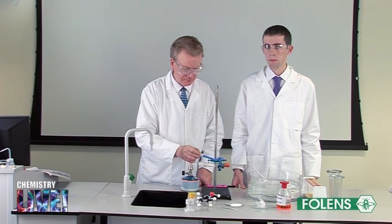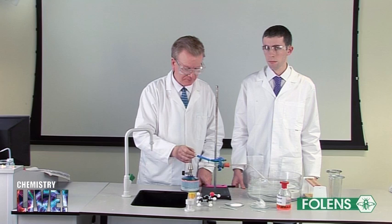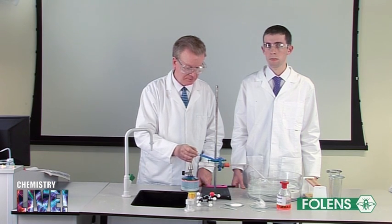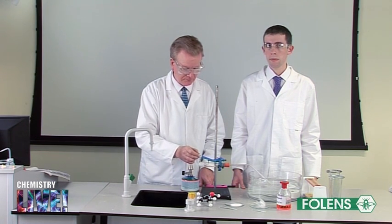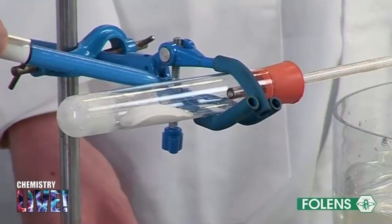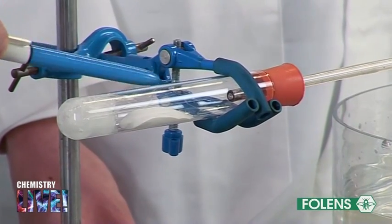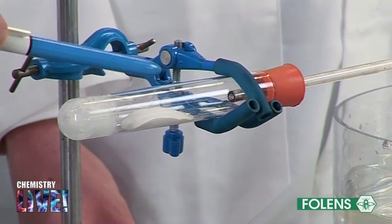Using a retort stand, the boiling tube is clamped near its mouth and in a horizontal position as shown. Using a spatula, a heap of aluminium oxide is placed about halfway along the boiling tube.